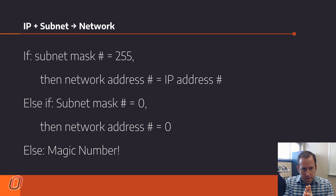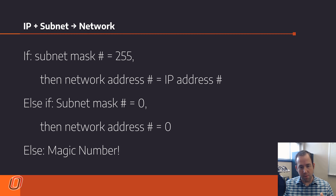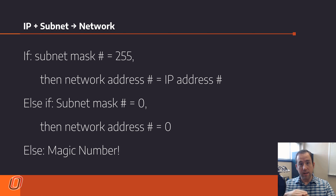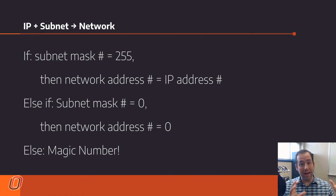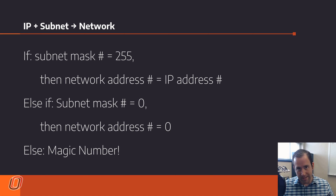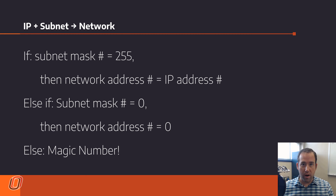From the simple IP addressing video: if the subnet mask number is 255, then the network address number is the same as the IP address number. If the subnet mask number is zero, then the network address number is zero. Where you need to worry about anything other than bringing numbers down or making numbers zero is when you've got anything other than a 255 or a zero in the subnet mask, because classless routing subnet masks can be any length at all.